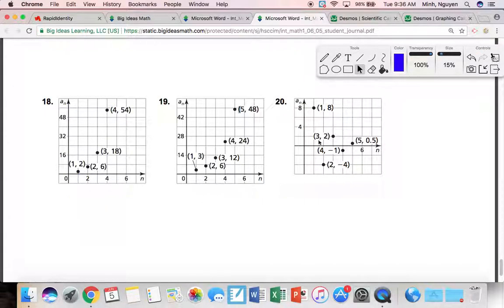Alright guys, that's it for geometric sequences, multiplying by the same number. Again, here your sequence is 8, negative 4, 2, negative 1, 0.5. How do I know that? 1, 2, 3, 4, 5. You just go in order. If you have any questions, ask your teacher or let me know.